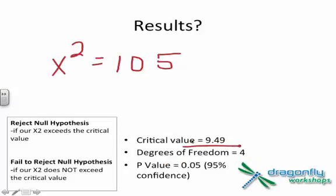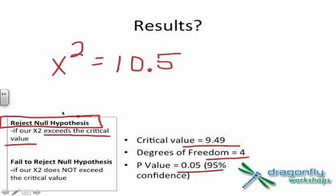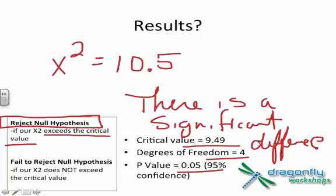Now remember our critical value was 9.49 with four degrees of freedom and 95% confidence. If this is 10.5, if this number exceeds the critical value, then we reject our null hypothesis. Our null hypothesis stated that there was no significant difference between them, which means there is a significant difference between the expected outcome of food and when we actually set different types of food out for the ducks. They absolutely must have preferred one or some of them over another.